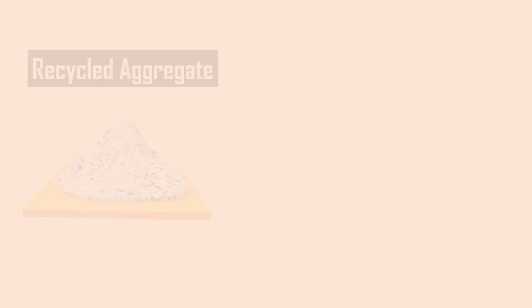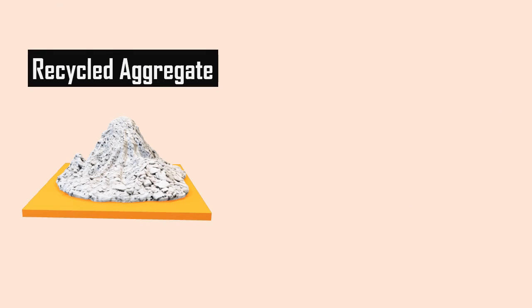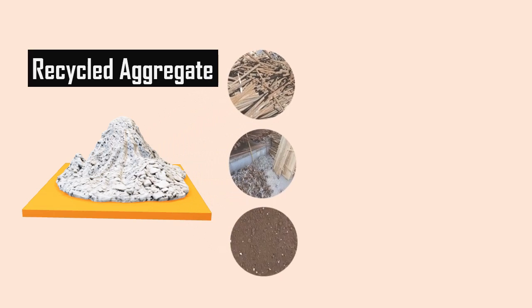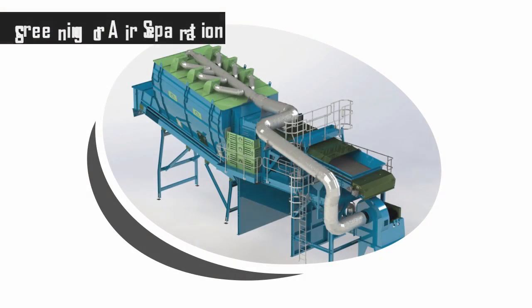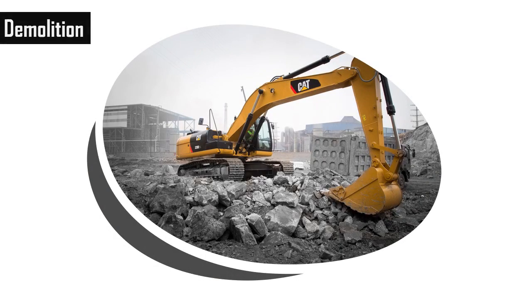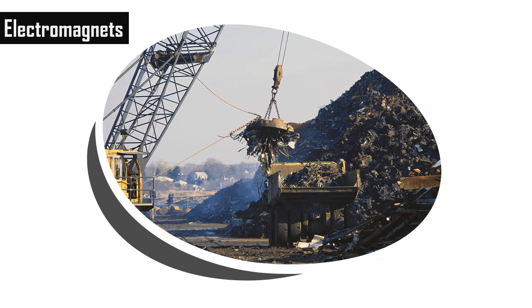To use recycled concrete aggregate for concrete, contaminants like reinforcing steel, foundation materials, soil, etc. are removed from the concrete debris. This can be done by screening or air separation, demolition, using electromagnets, etc.